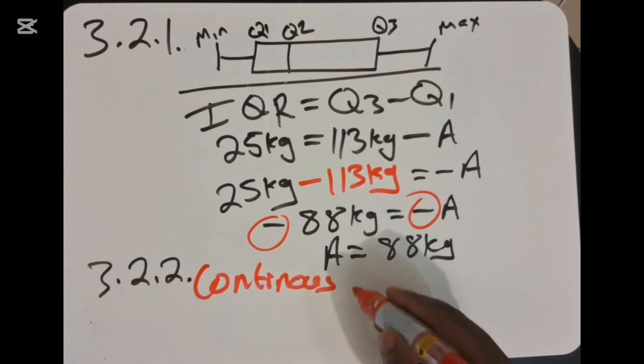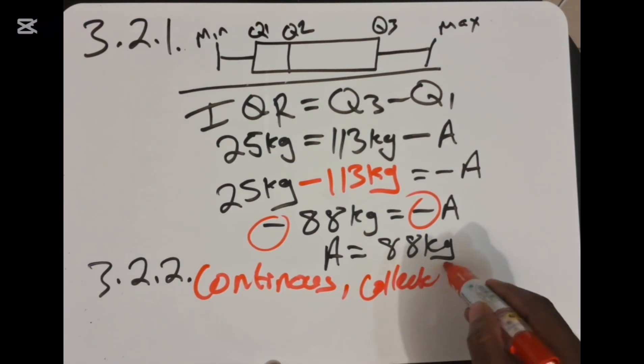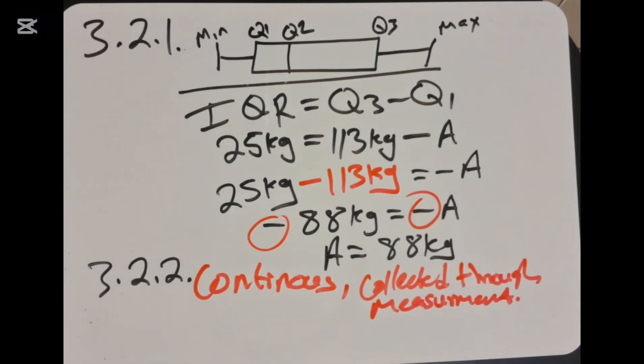So in this case, our answer is going to be continuous. This is continuous data. The reason data is obtained through measurement—data is collected through measurement. That's the reason why this is continuous. You should not forget that discrete is data that is collected through counting.